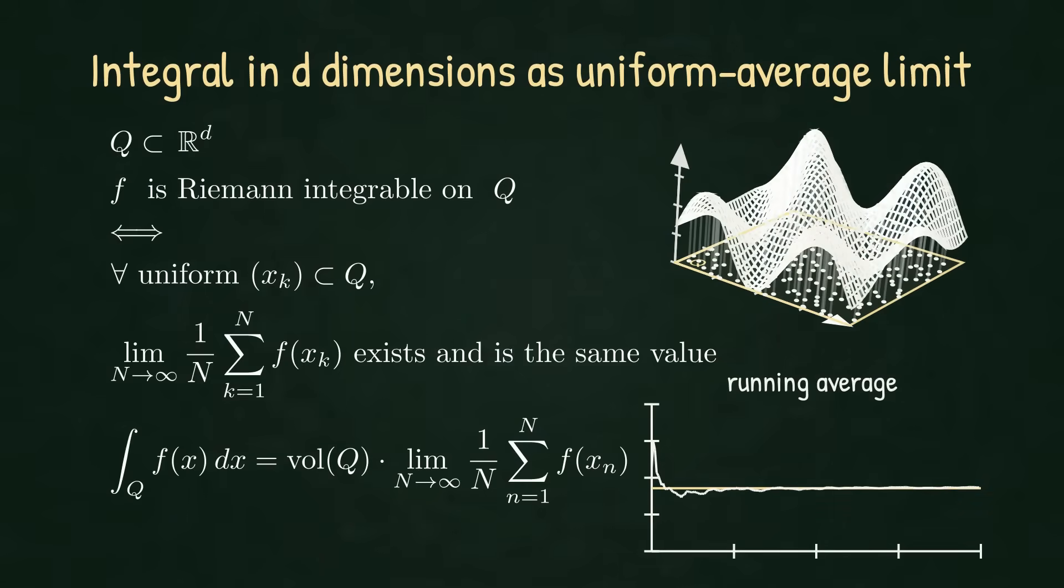and see the limit stabilize. Every axis-aligned region is visited in the correct proportion, so the running average flattens towards the true integral. No rectangles required. This is Riemann integration re-expressed as a uniform average over space.